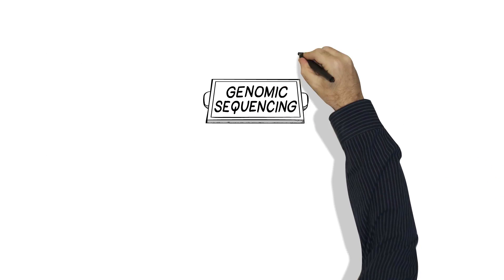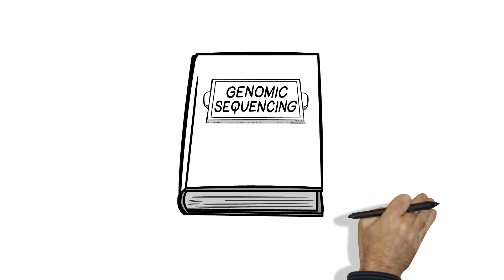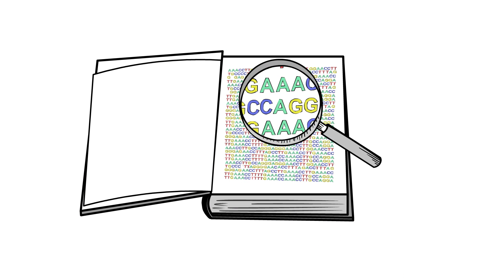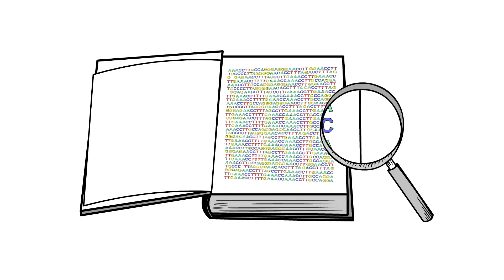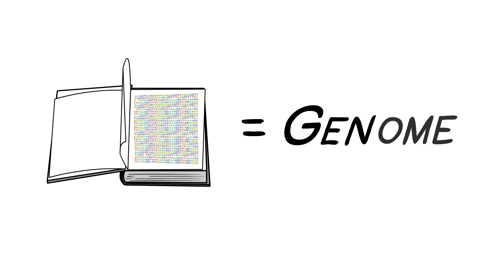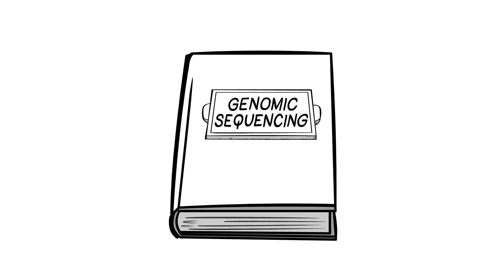You can think of your entire genetic makeup as a book. For a while, we've been able to read pages of this book or a few genes at a time. But now, we can read almost the whole book. It's what we call a genome. Reading most of, or your whole genome, is called genomic sequencing.